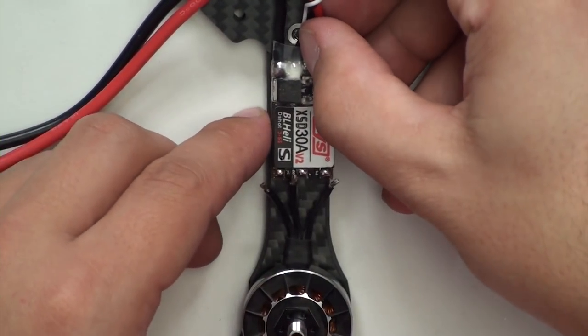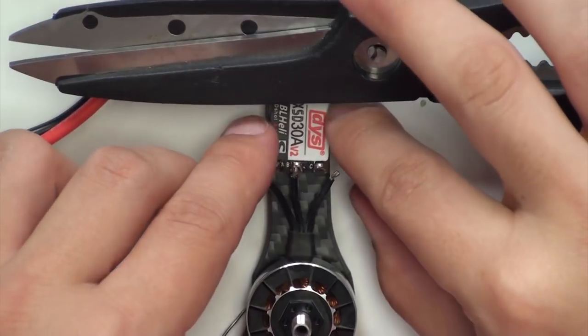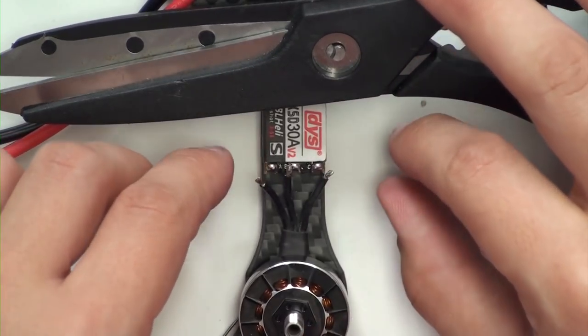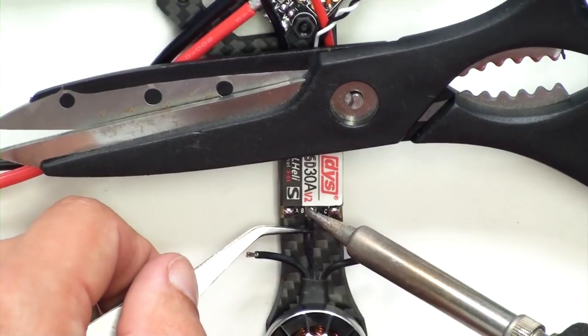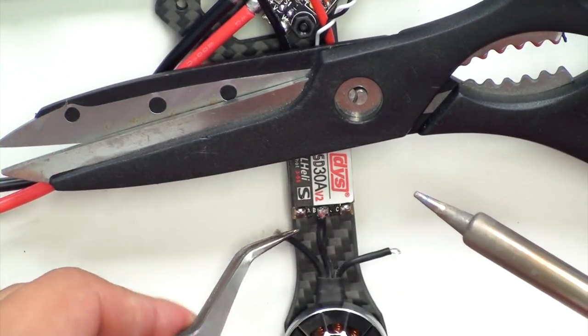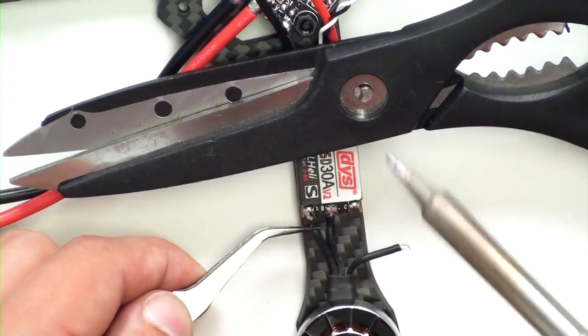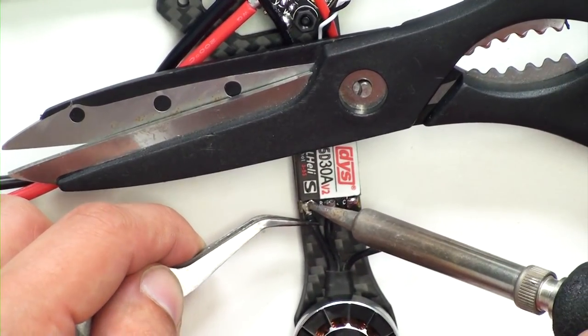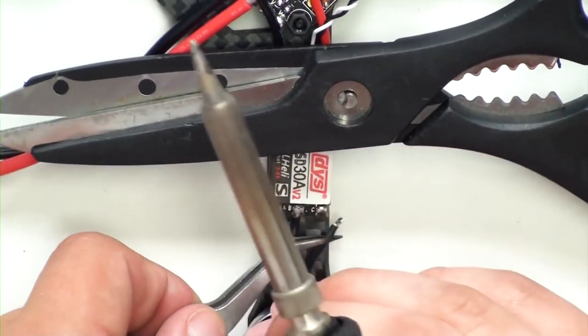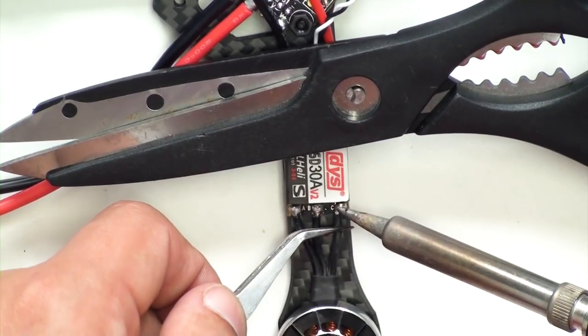I will also pre-tin the ESC ends. Take your ESC, line it up on the arm where you want it to be, and you can use something heavy just to hold it down. I'm going to use these pairs of scissors. Get it lined up how I want it to sit. Take the center wire and just solder it down onto it, and then do the same for the other two sides.